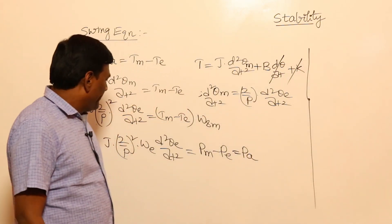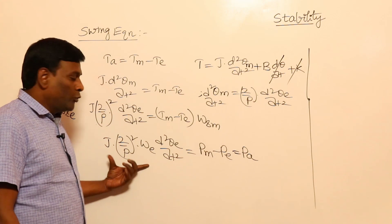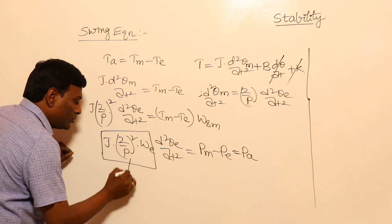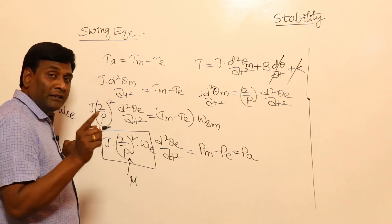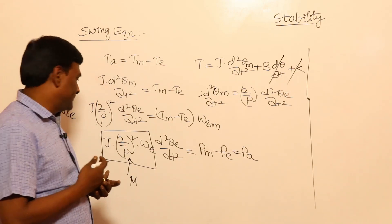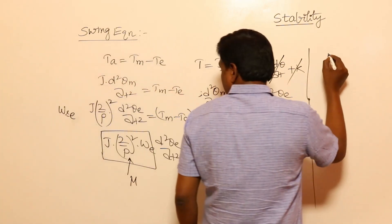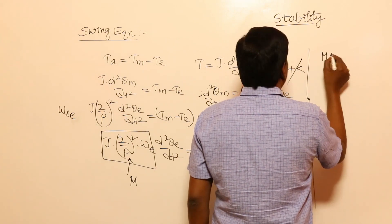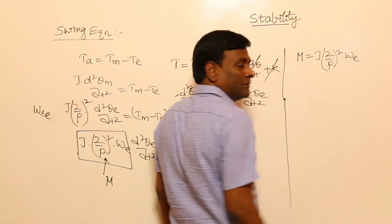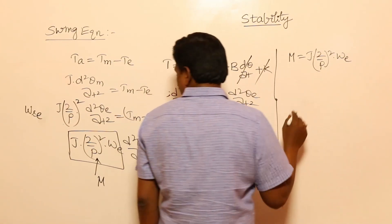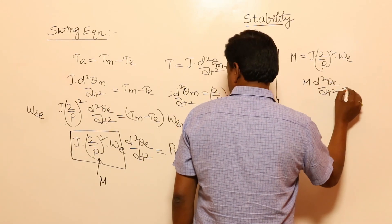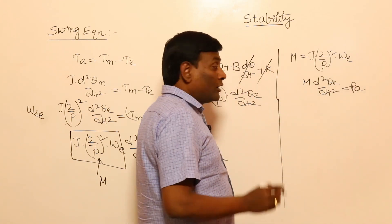The quantity J·(2/P)²·ω_electrical is called the angular momentum M. So the swing equation becomes: M·(d²θ_e/dt²) = P_a (accelerating power). We will discuss M per unit shortly — stay tuned.